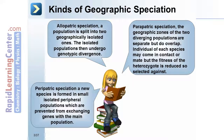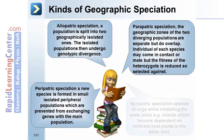Peripatric speciation occurs when a new species is formed in small, isolated, peripheral populations, which are prevented from exchanging genes with the main population.